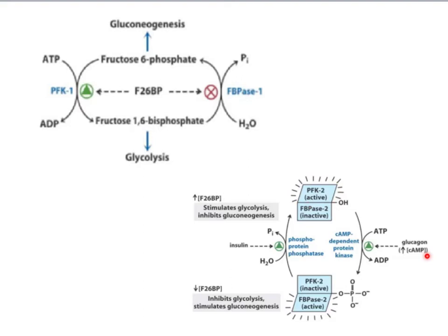Insulin dephosphorylates; glucagon phosphorylates. To summarize: fructose 2,6-bisphosphate activates PFK1 leading to glycolysis, and at high concentrations inhibits FBPase1, inhibiting gluconeogenesis. At low concentrations, FBPase1 is more active than PFK1, swinging the teeter-totter to gluconeogenesis. This is all controlled by insulin and glucagon. At a feeding state with a lot of glucose in the blood, insulin is going to lead to glycolysis. But in a starvation state, glucagon is going to be in control, increasing cyclic AMP and enhancing gluconeogenesis.